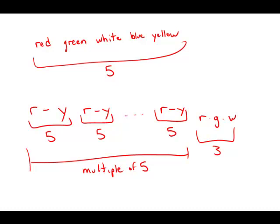So the total number of beads is a multiple of five plus three. Or another way to say that is it's a number when if we divide by five, we'll get a remainder of three.